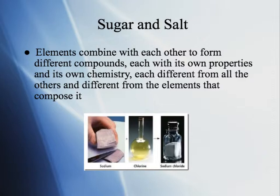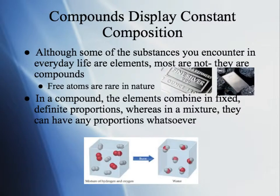Just like sodium metal and chlorine gas are completely different from the sodium chloride — table salt — that they make after reacting. Most of the substances and matter we come into contact with in everyday life are actually compounds. Very rarely are atoms found free in nature. Some metals, like silver and platinum, can be found pretty pure, not reacted with anything else, though even silver can react to form different compounds.